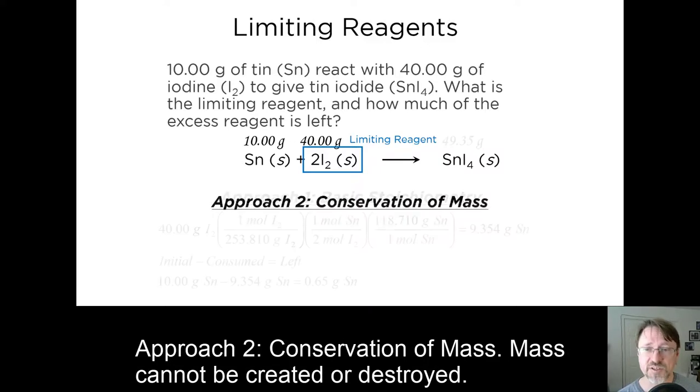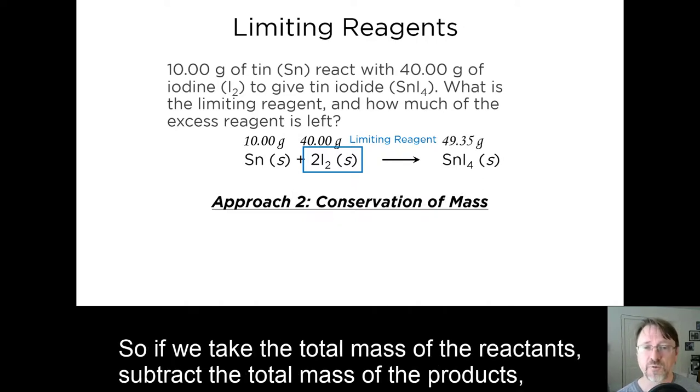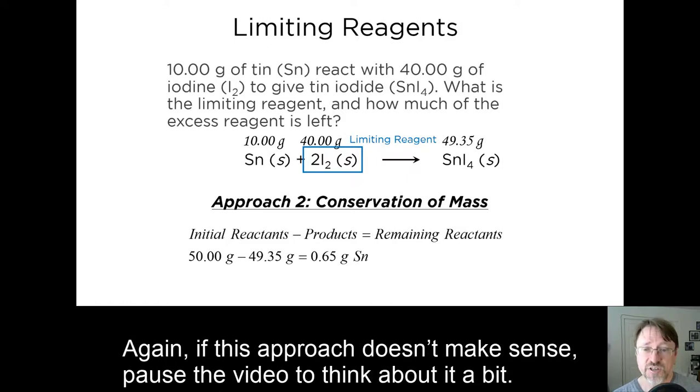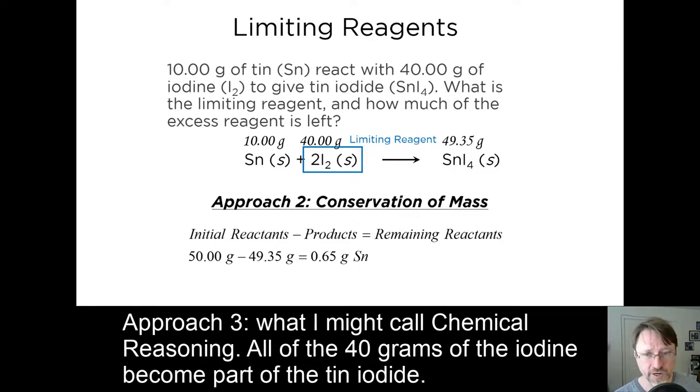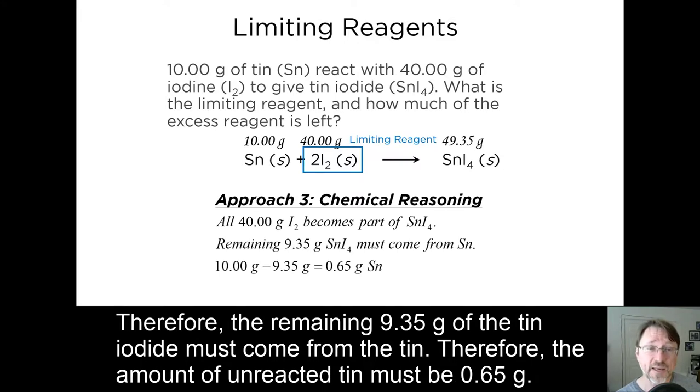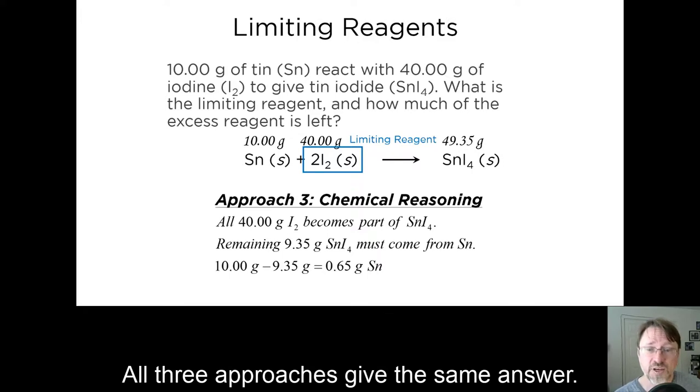Approach two, conservation of mass. Mass cannot be created or destroyed. So if we take the total mass of the reactants, subtract the total mass of the products, the remaining mass must be the amount of leftover reactants. Again, if this approach doesn't make sense, pause the video to think about it a bit. Approach three, what I might call chemical reasoning. All of the 40 grams of the iodine become part of the tin iodide. Therefore, the remaining 9.35 grams of the tin iodide must come from the tin. Therefore, the amount of unreacted tin must be 0.65 grams. All three approaches give the same answer.